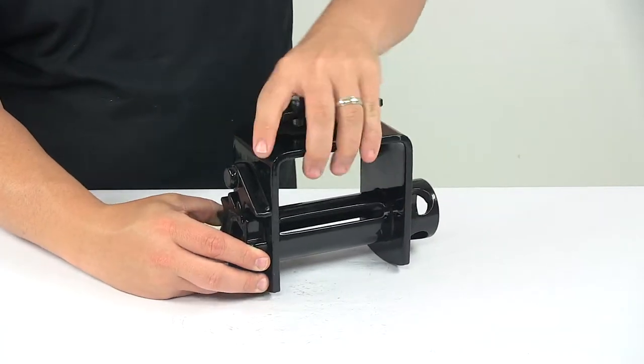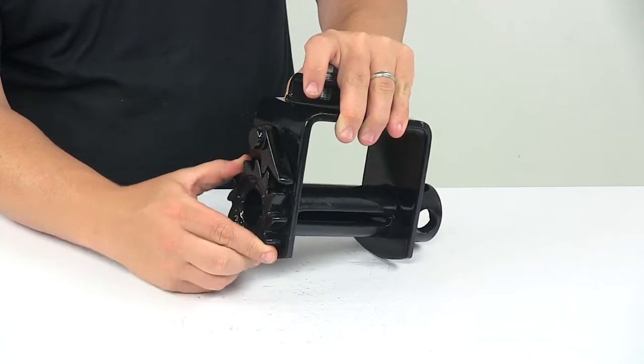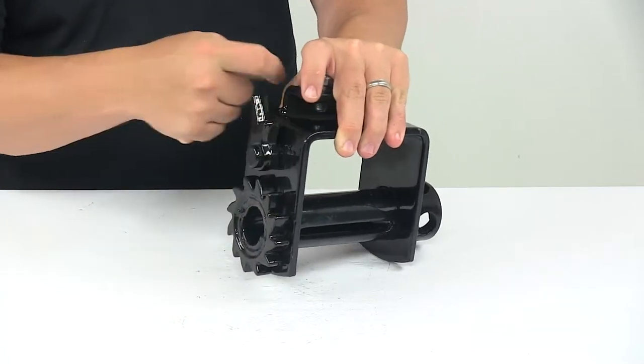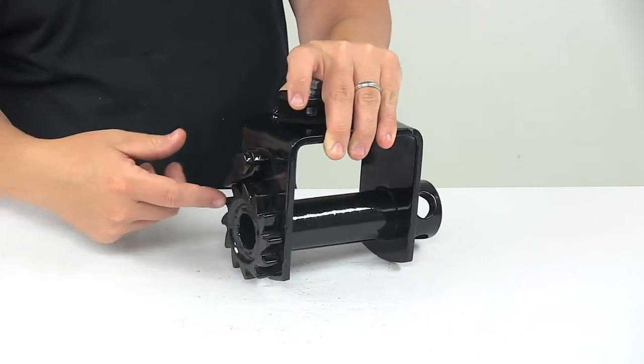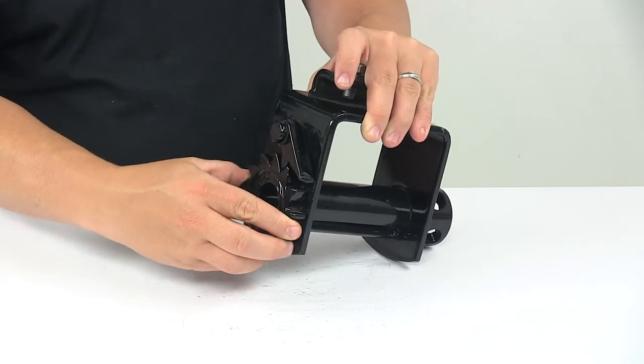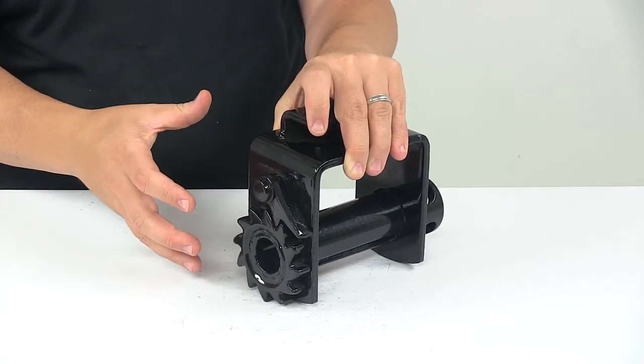On this side right here you have your catch mechanism. So you have the lever right here. You flip that up to disengage, allows it to go into free spool, and then flip it down so that it does engage and hold the strap securely in place.